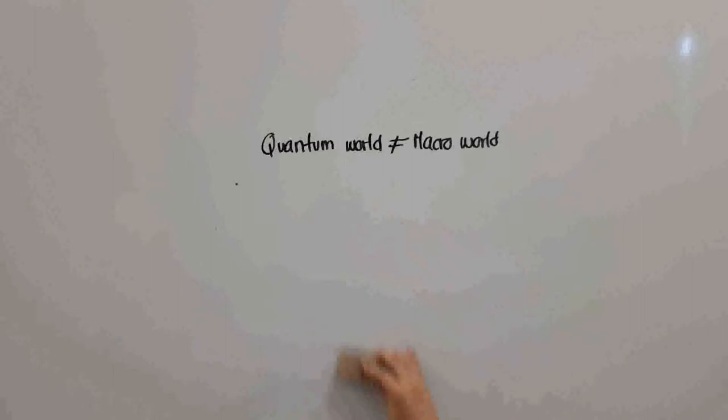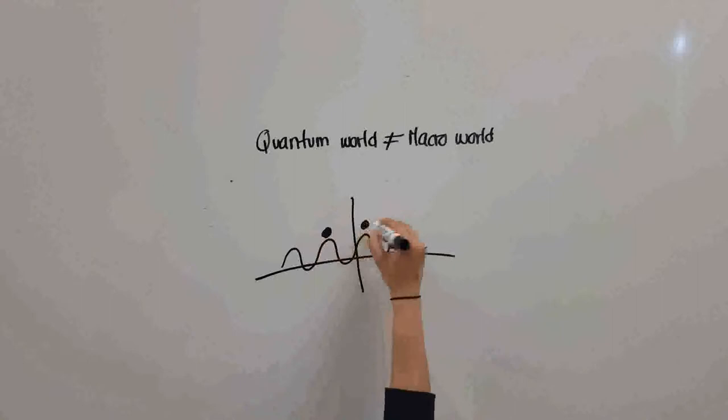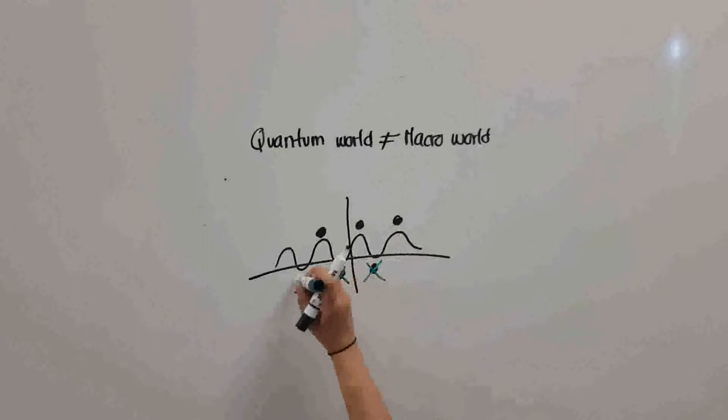The wave function is then a probability function where the high points indicate the most likely places for the particle to be. In reality, wave functions describe the position of the particle via its quantum states.